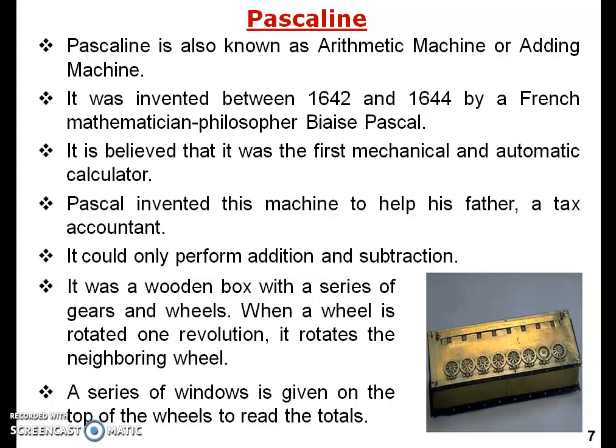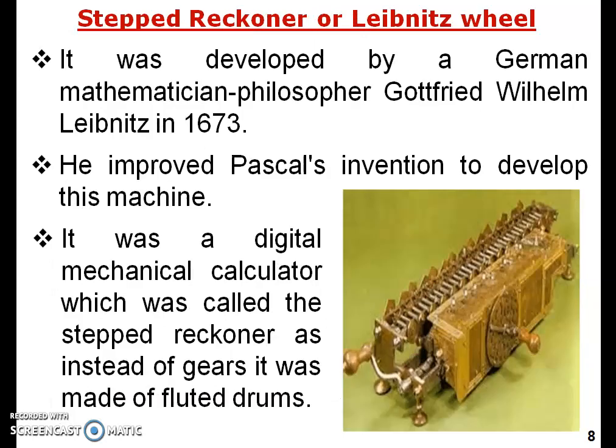It was a wooden box with a series of gears and wheels. When one wheel completed one revolution, it would rotate the neighboring wheel — that is why it is known as an automatic machine. A series of windows on top of the wheel allowed the user to read the totals.